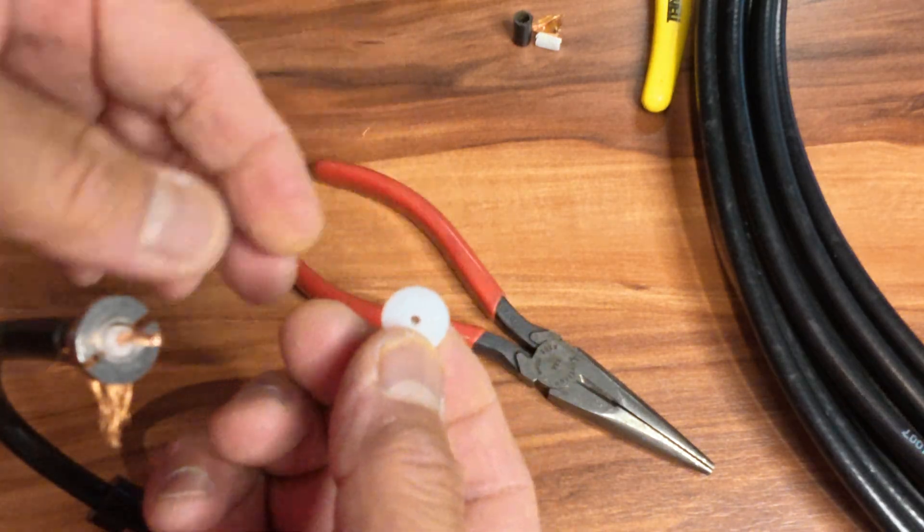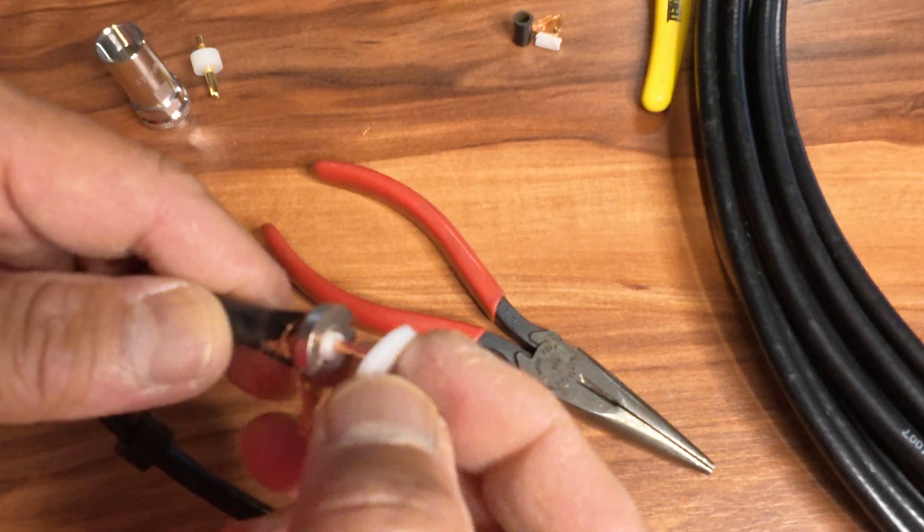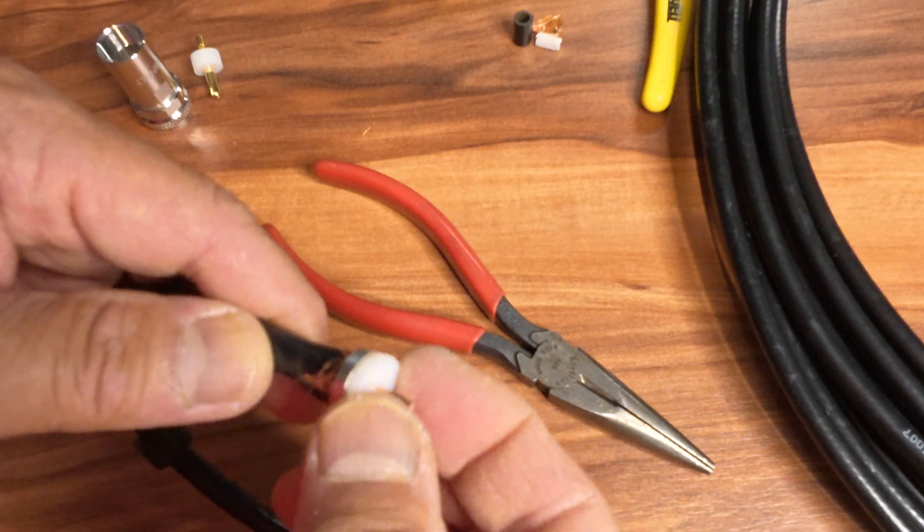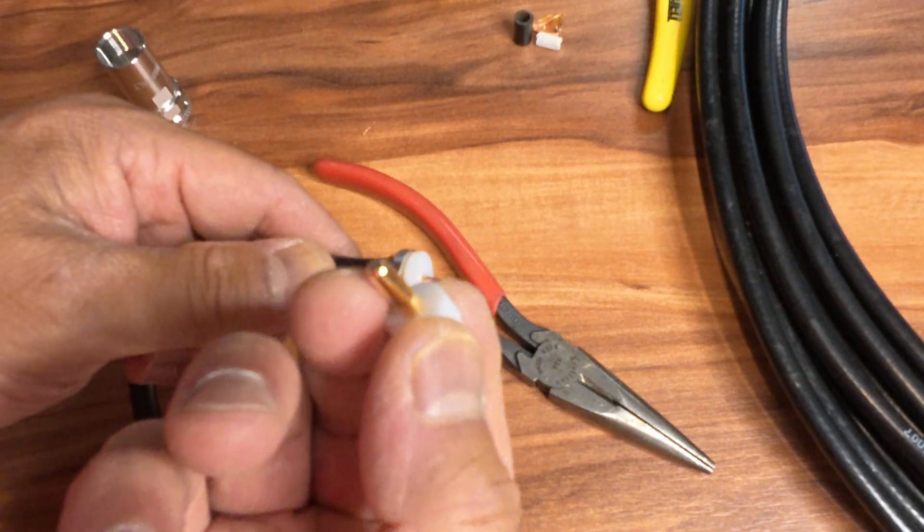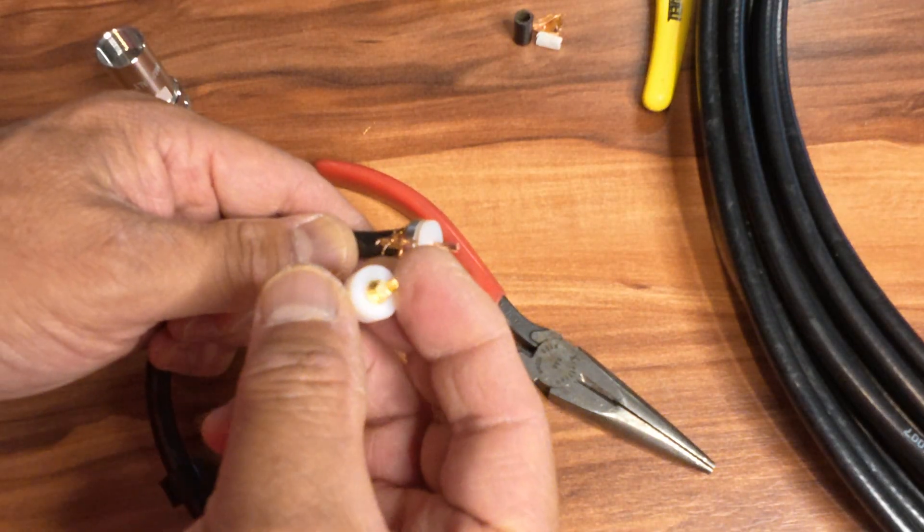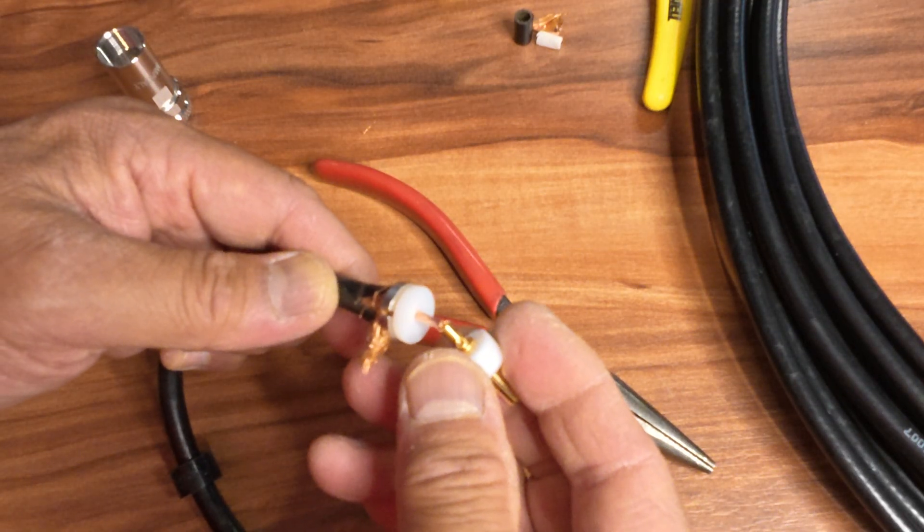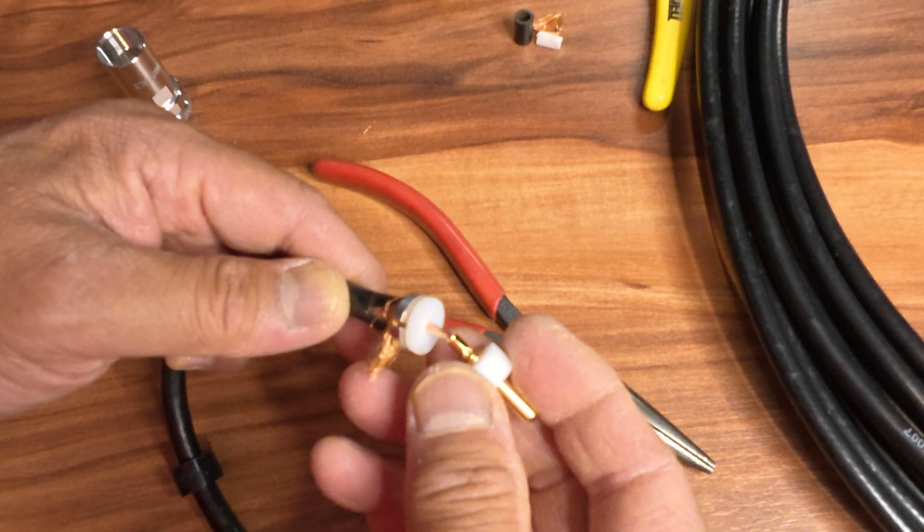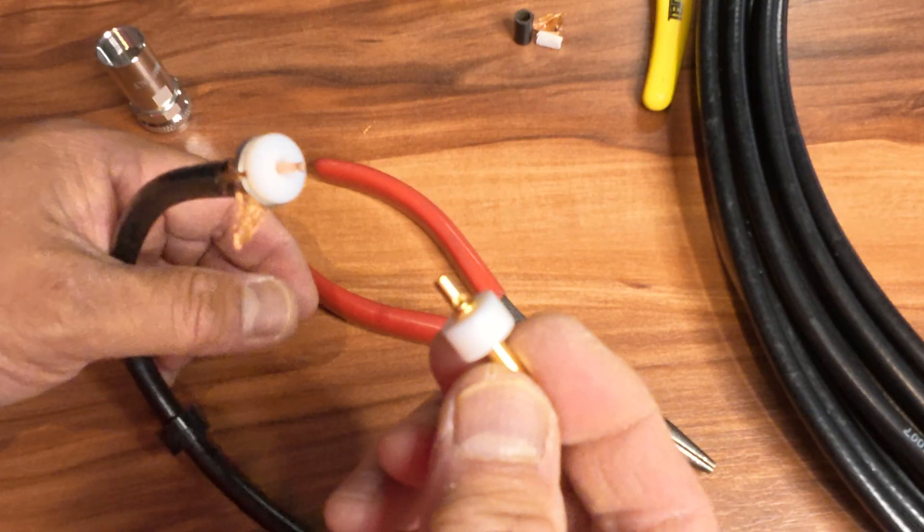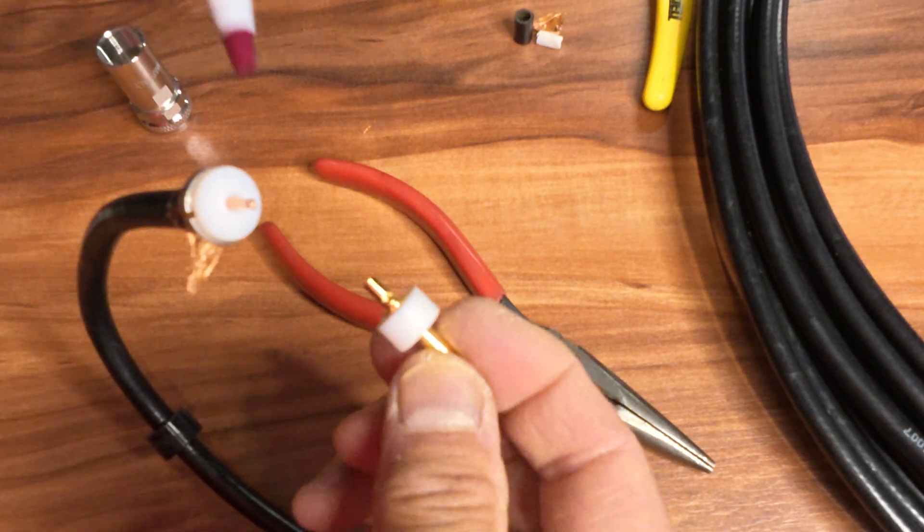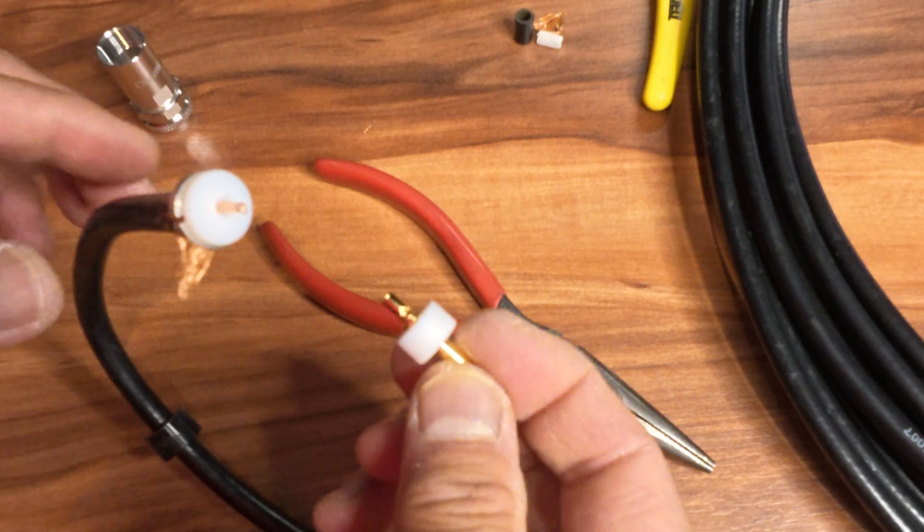Next is this insulating disc here. Put that in. And the center pin. On the center pin notice that there is a hole. It's right here. We'll be using that hole to put some solder down in it.